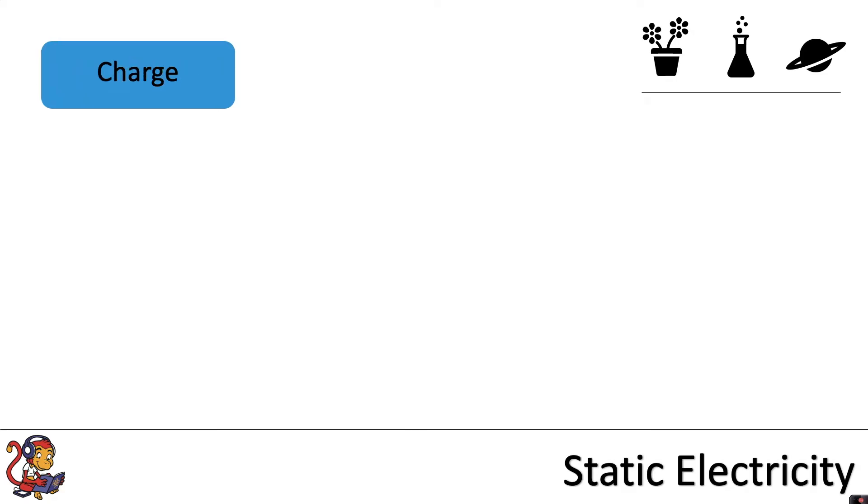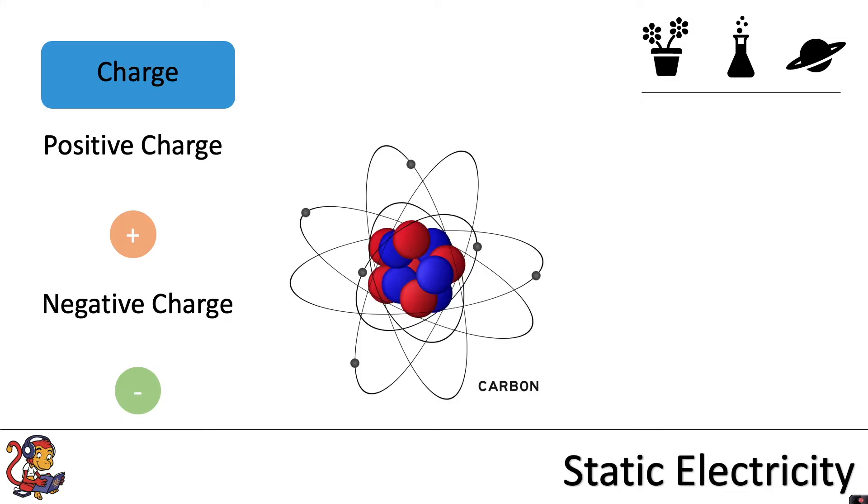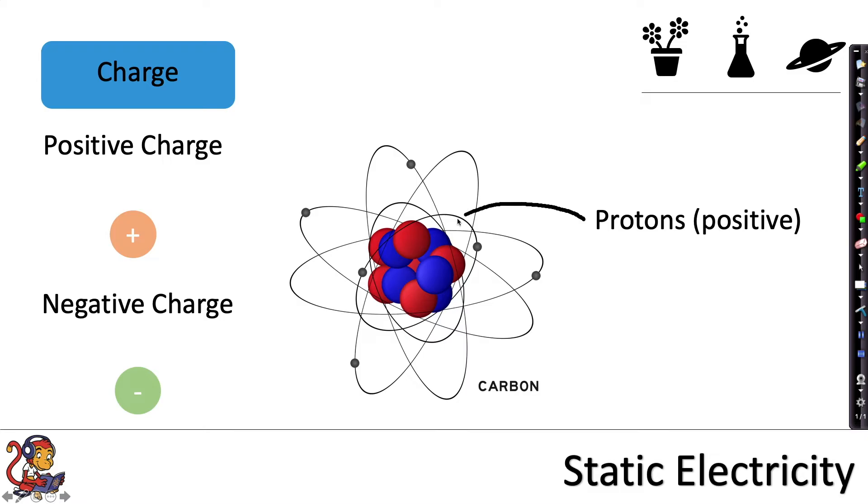So there are two types of charge, positive charge and negative charge. Absolutely everything in the world is made up of atoms and atoms contain charged particles. Atoms contain protons which are positive and these are found in the middle of the atom in the nucleus.